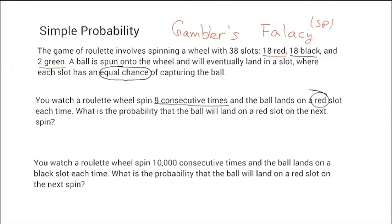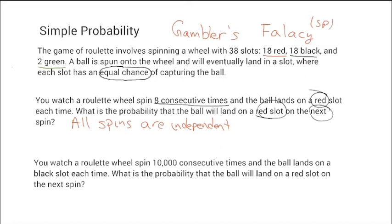What is the probability it's going to land on red the next time? Here's the big thing: all spins are independent, so it does not matter what I got on the previous result to figure out the probability for the next result. The probability of getting red is the number of red slots divided by the total number of slots. Going 18 divided by 38, rounded to four decimal places, I get 0.4737.